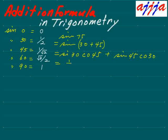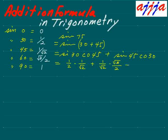Simply, you just calculate from this: sine thirty means a half, cosine forty-five is one over square root two, plus one over square root two times cosine thirty — which is square root three over two. Bottom is two square root two, top is square root three and one together. So you can say square root three plus one over two square root two.